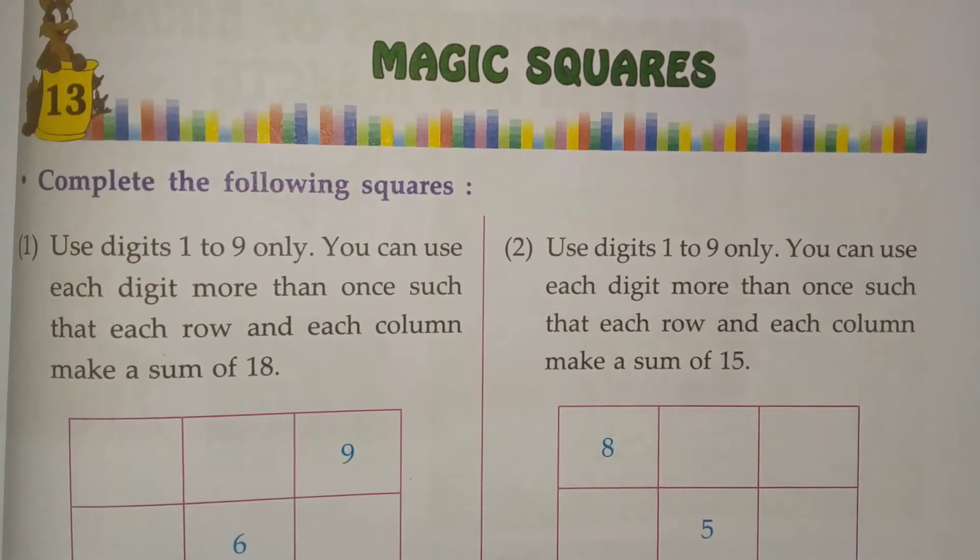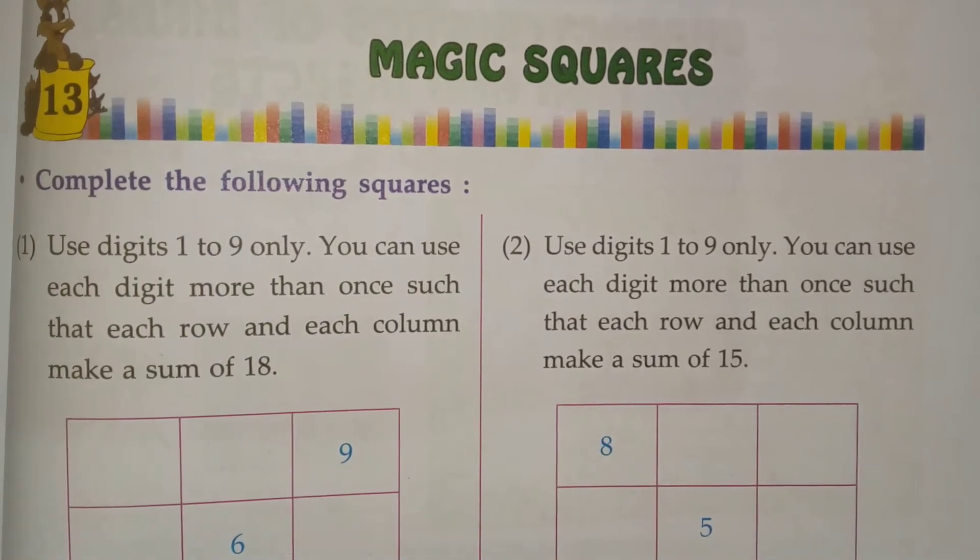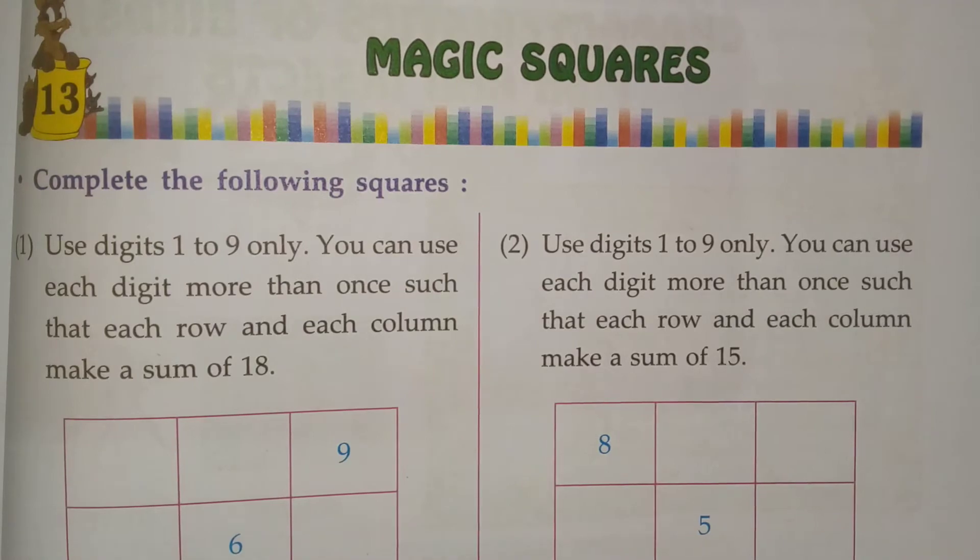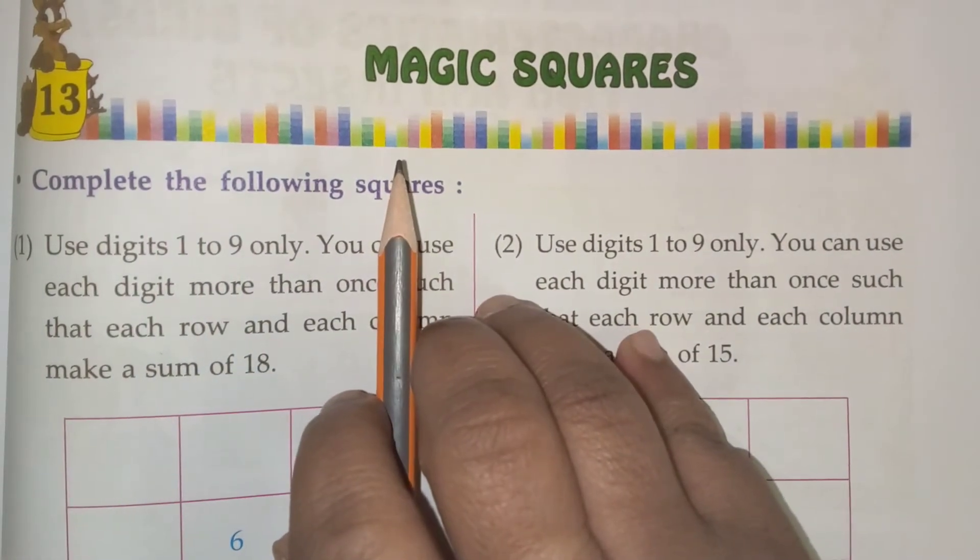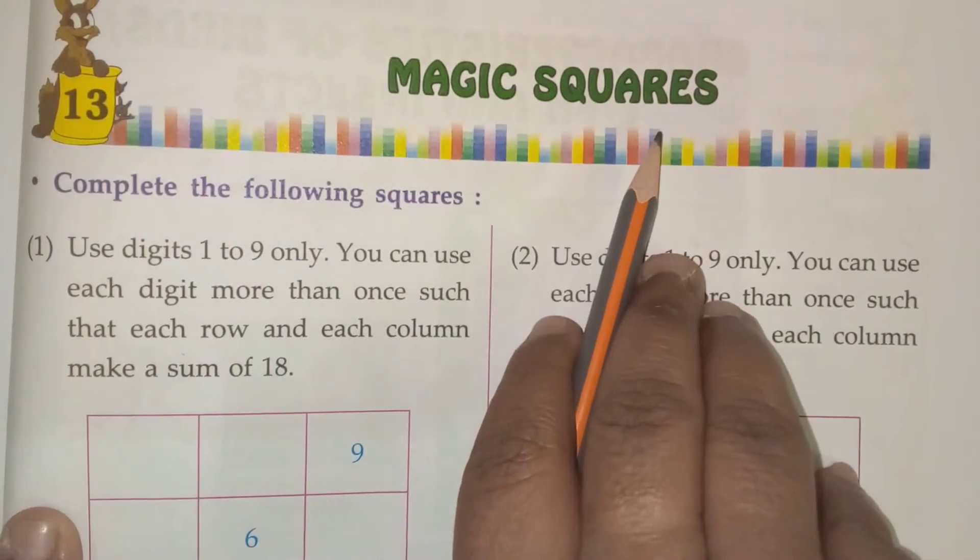Hi children, welcome to V.I.N. Sushmit Iyam. Today we are going to learn J.K. Chapter 13, Magic Squares.